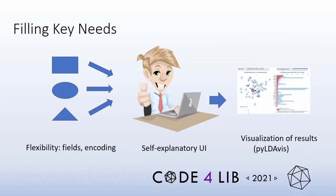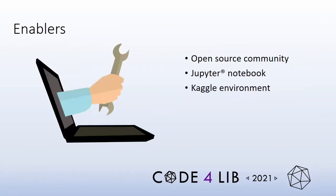Thankfully, there is a robust open-source community that shares machine learning and visualization routines that support low-code Python development, including some really nice visualization routines. The Jupyter Notebook is another enabler because it can walk a citizen data scientist through the data science process. In addition, the Kaggle environment provides a Python core complete with stable builds of the necessary Python libraries, which overcomes a big barrier to entry for Python coding: the issue of version compatibility in a fast-moving open-source world.